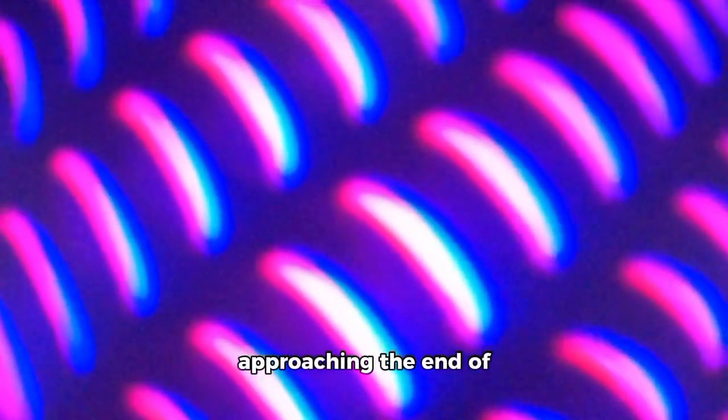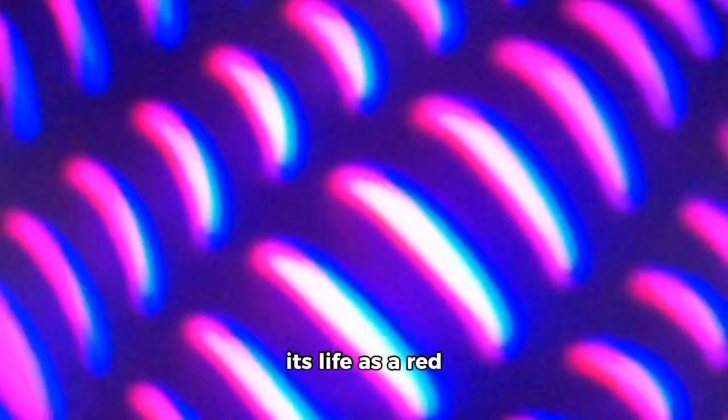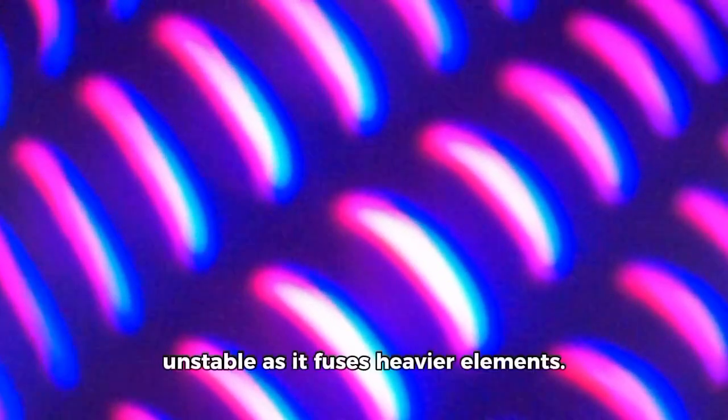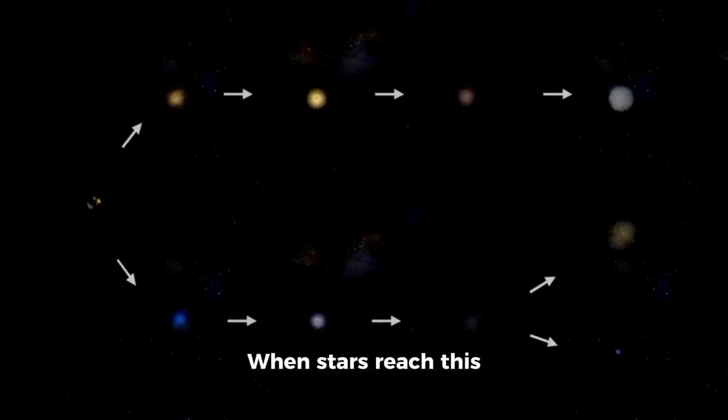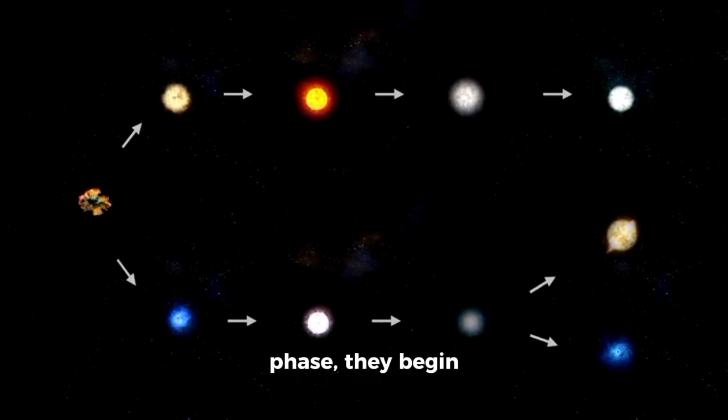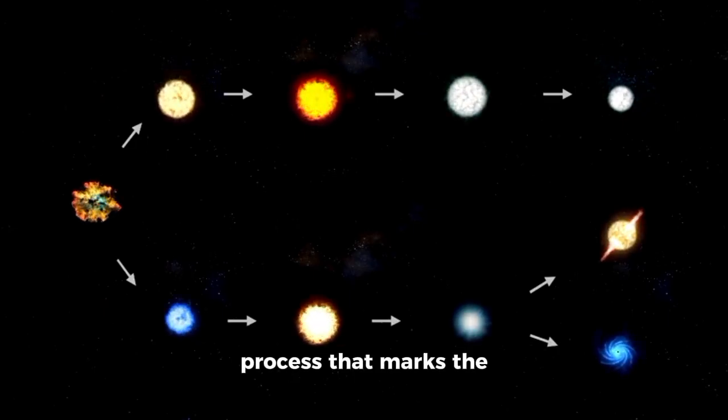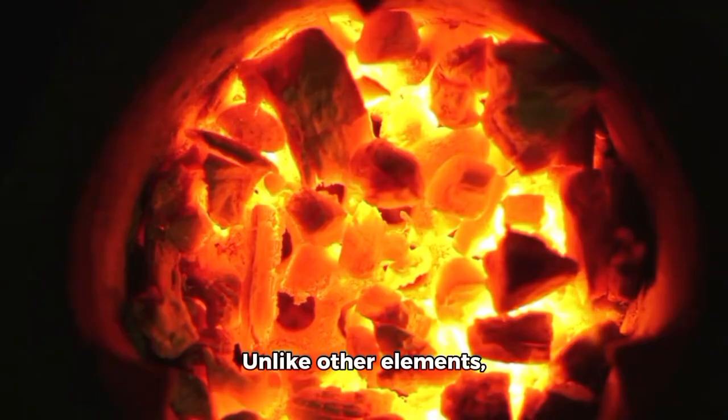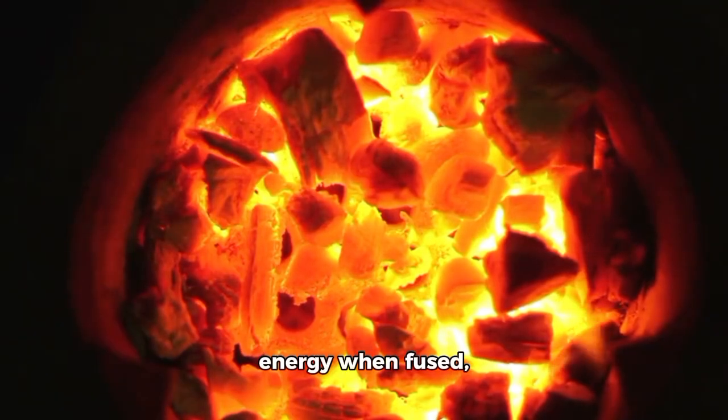Simulations conducted by astrophysicists reveal that the star's core is becoming increasingly unstable as it fuses heavier elements. When stars reach this phase, they begin producing iron, a process that marks the final stage before collapse. Unlike other elements, iron doesn't release energy when fused, resulting in a mass accumulation that ultimately forces the core to collapse.